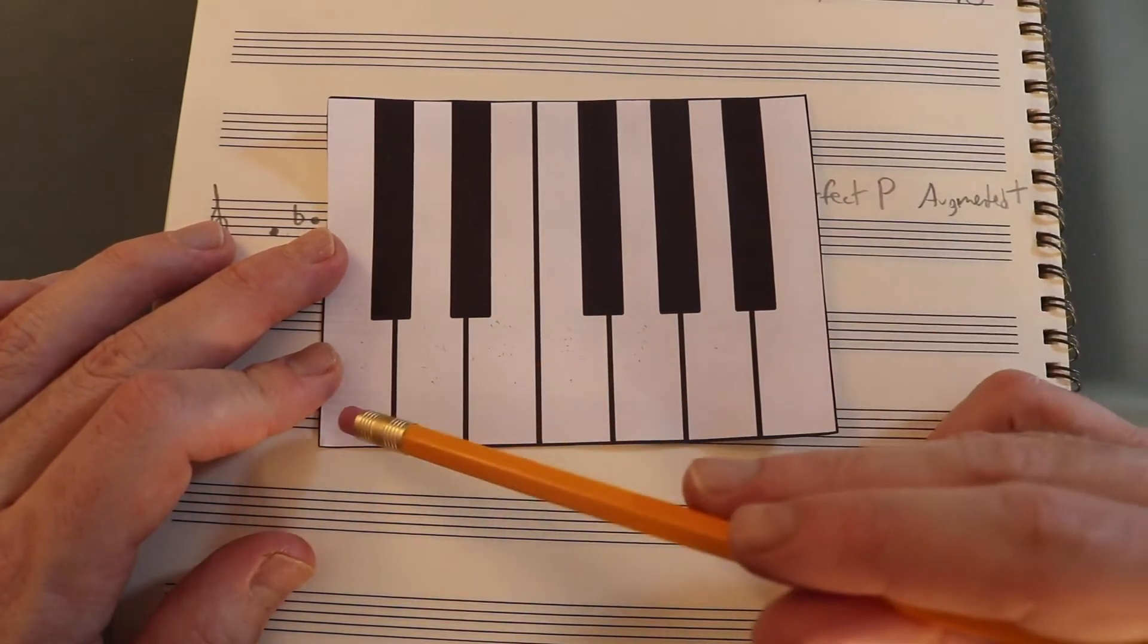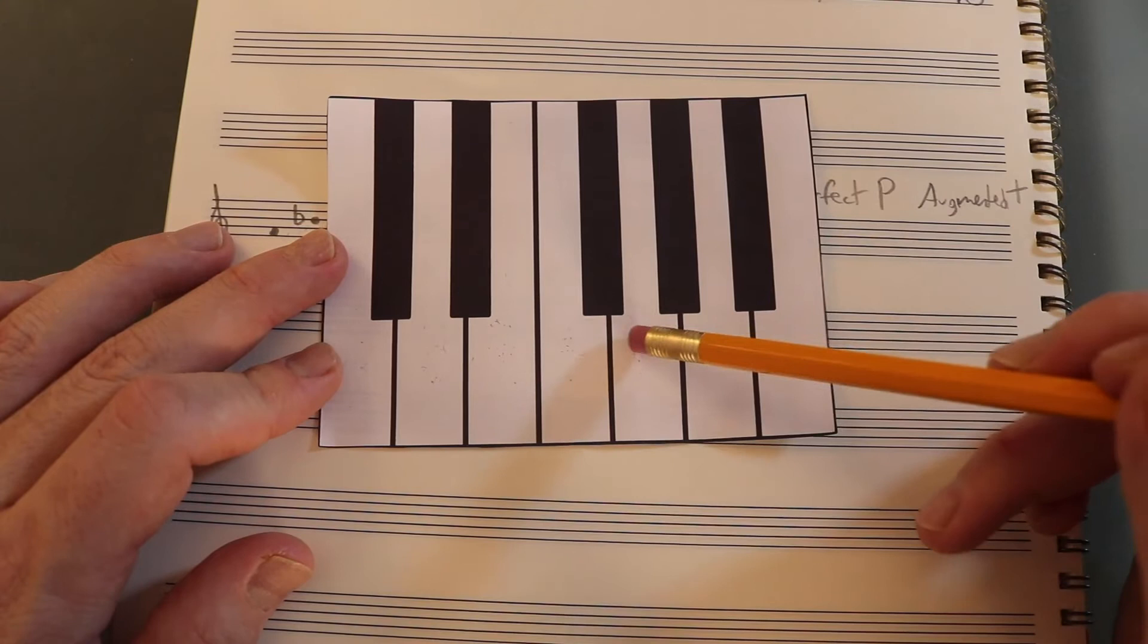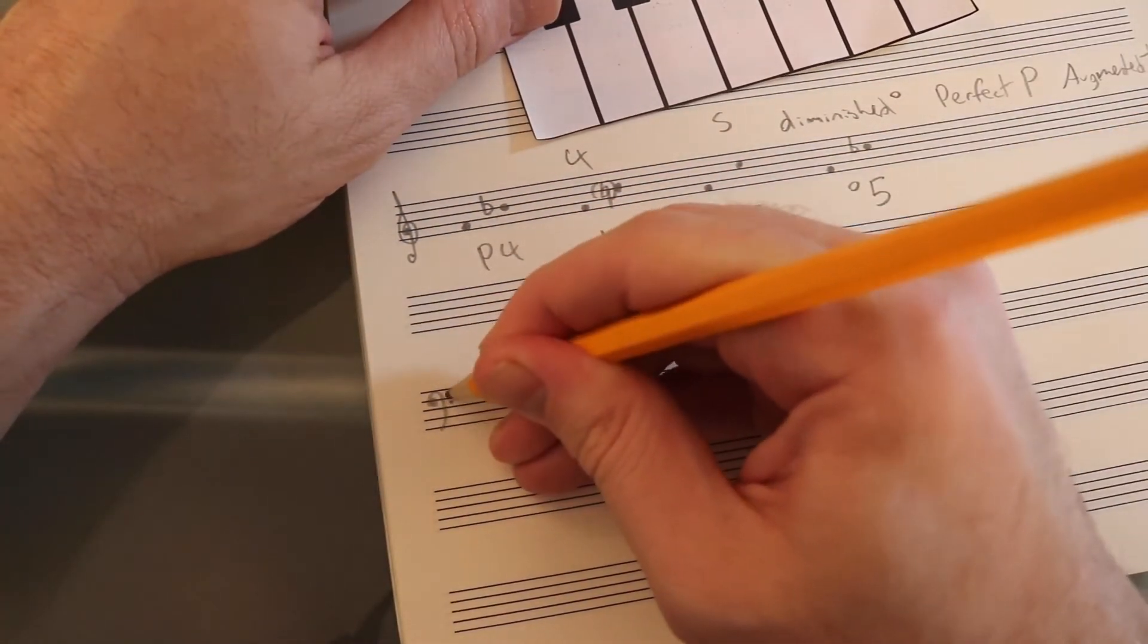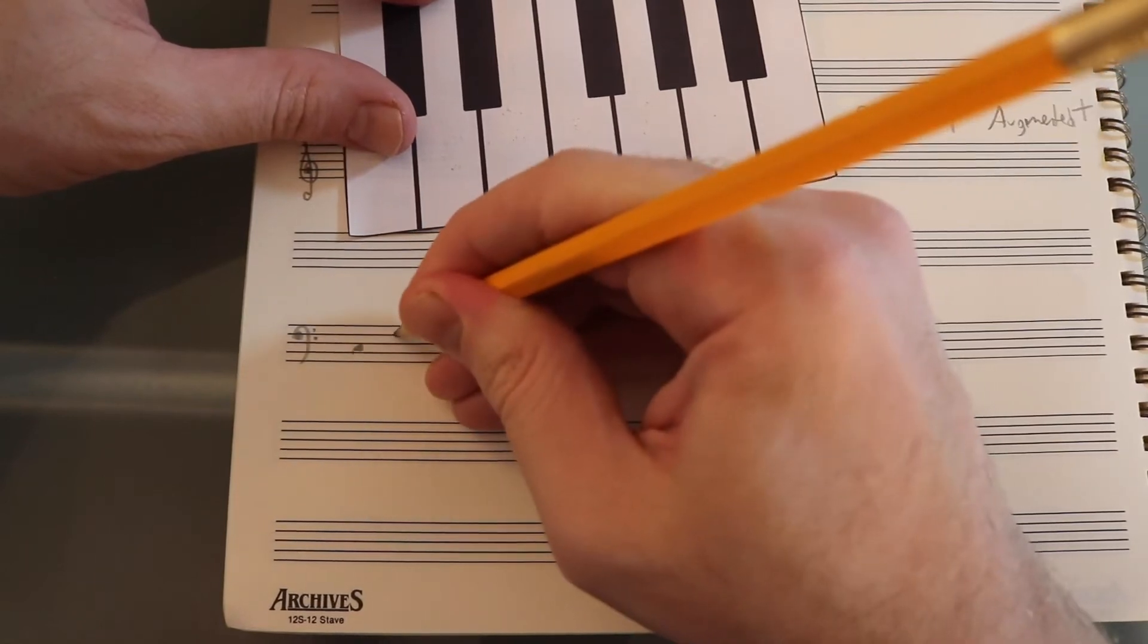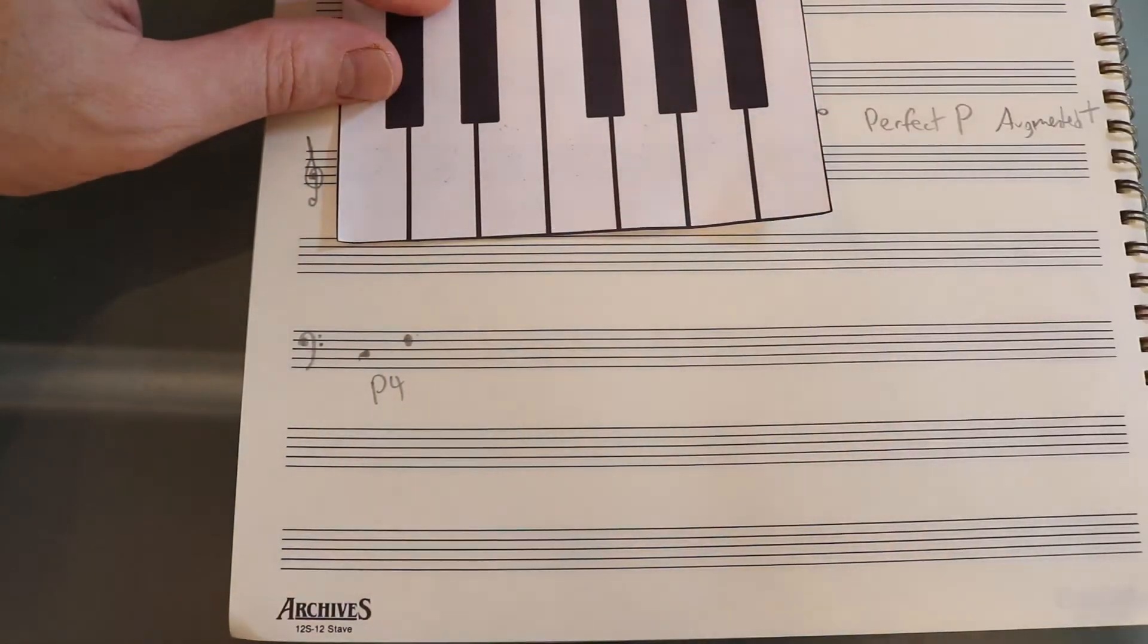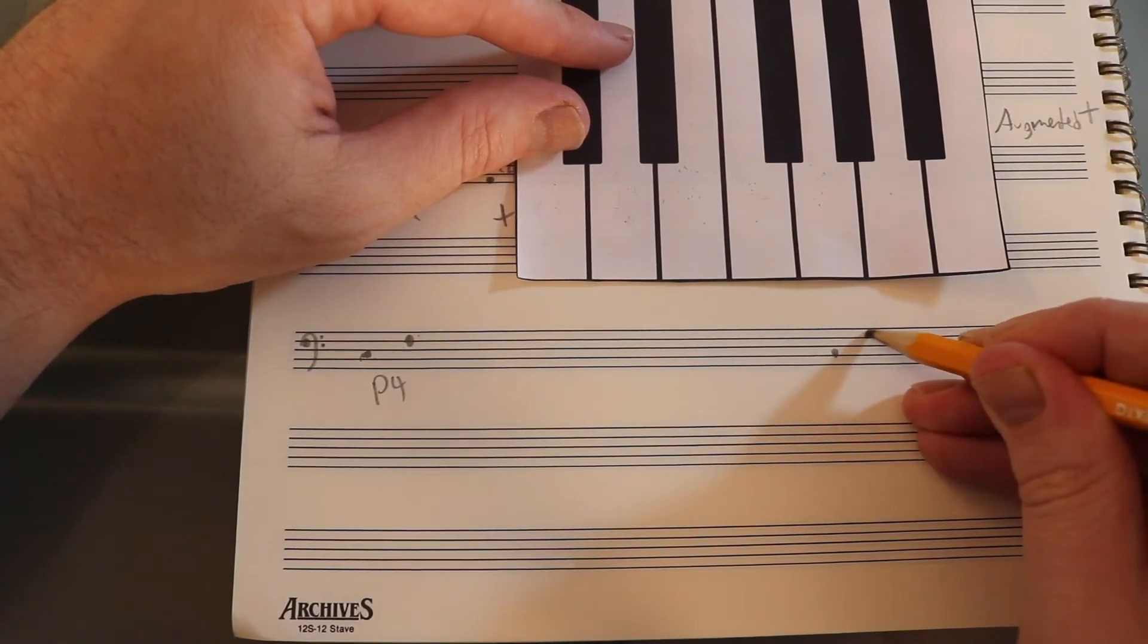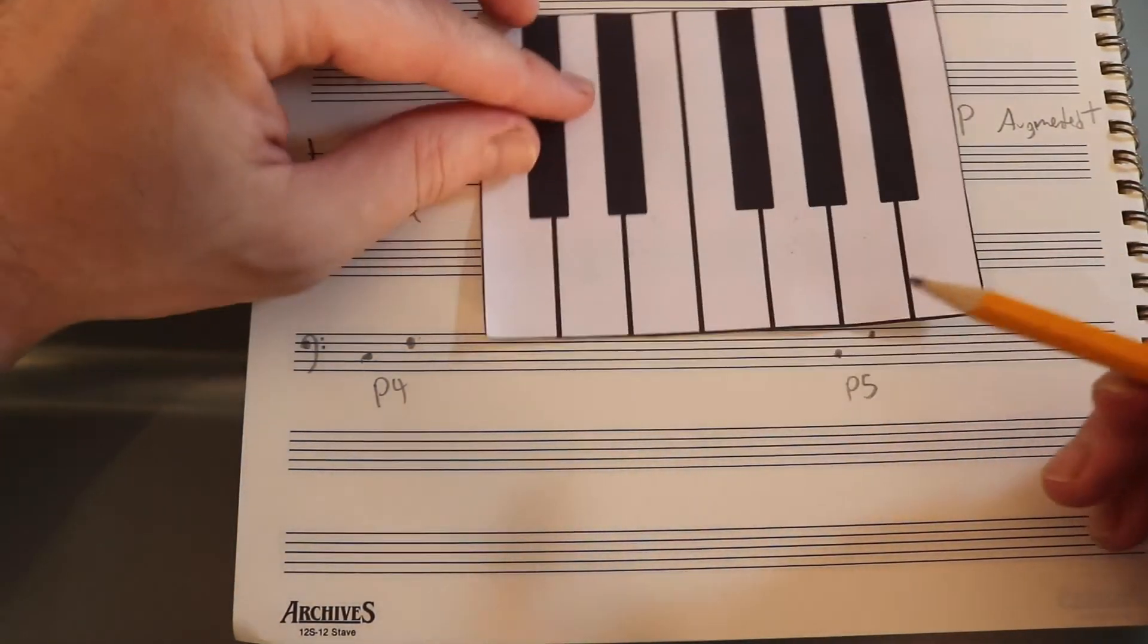I could call it augmented fourth if I'm going from C to F-sharp, or a diminished fifth if I'm going from C to G-flat. I'm going to explain that one more time because it's a little confusing, and this time I'll write it out on the staff as well. I'll use a bass clef this time. The first example I showed you was C to F. That's a perfect fourth. It's a fourth apart. One, two, three, four. And it's perfect. It's a half step bigger than a major third. That's a perfect fourth.